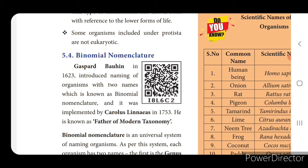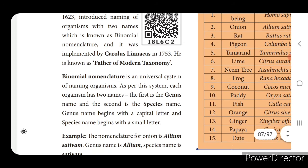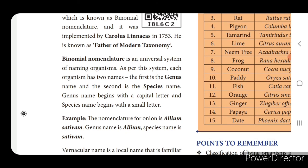Next we will see binomial nomenclature. Nominal means name; binomial means two names. Gaspard Bauhin in 1623 introduced the naming of organisms with two names, which is known as binomial nomenclature, and it was implemented by Carolus Linnaeus in 1753 - hence he is known as father of modern taxonomy. Binomial nomenclature is a universal system of naming organisms; each organism has two names. Genus name begins with a capital letter and species name begins with a small letter.